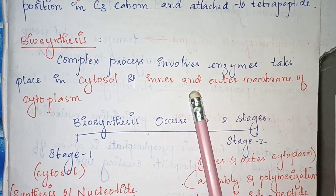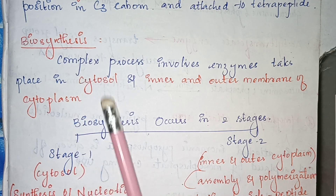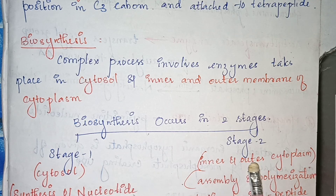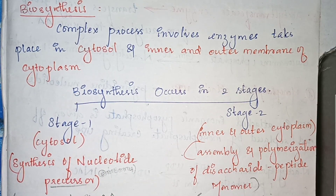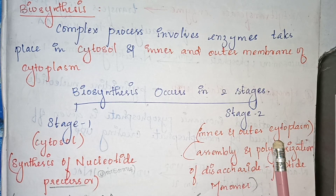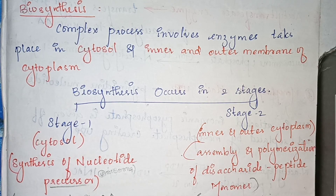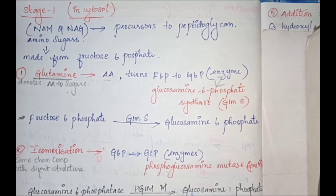Biosynthesis of peptidoglycan is a complex process involving certain enzymes that catalyze the process. It takes place in two stages: stage one occurs inside the cytosol, where synthesis of precursors — carbohydrates and amino acid metabolism — takes place. Stage two happens at the inner and outer membrane of the cytoplasm, where assembly and polymerization of the disaccharide-peptide monomer occurs.